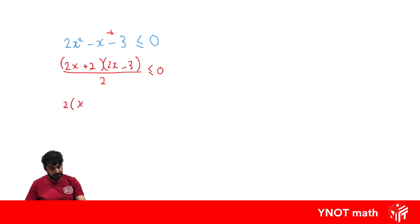Then we can factorize out one of the brackets to cancel with that 2 in the denominator. So we're going to get x plus 1 when we factorize the 2 out, 2x minus 3 all over 2 is less than or equal to 0. We can cancel these out.